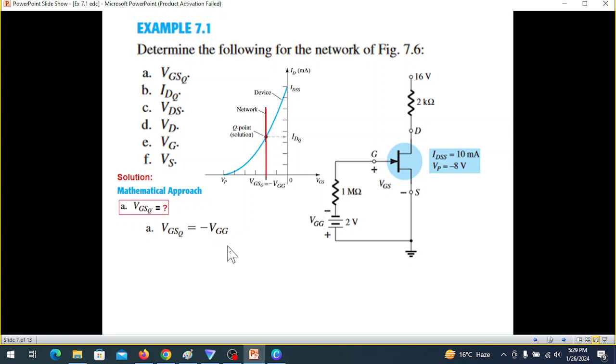Then we come to part B, IDQ. For IDQ we have to take help of the Shockley formula. The question gives that IDSS is 10 milliampere. We plug in VGS we just found to be minus 2, VP is also given as minus 8. Following this we find IDQ to be 5.625 milliampere.